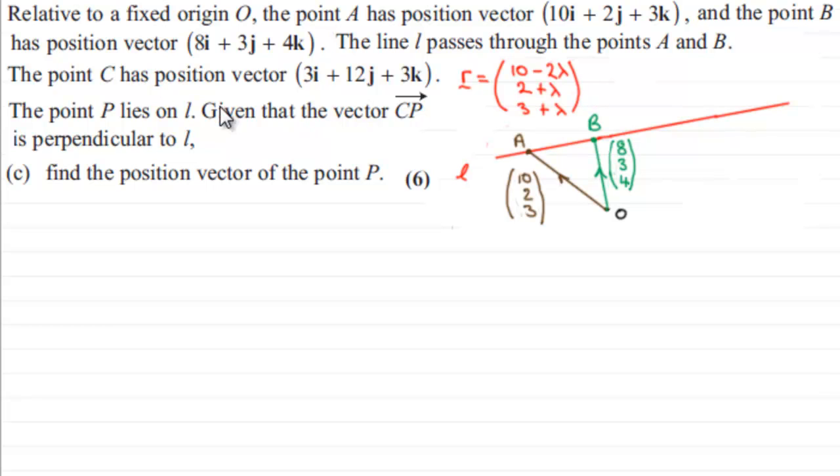We worked out also that the general position vector of any point given by R on this line L could be 10 minus 2 lambda, 2 plus lambda and 3 plus lambda. So, what we've got now is that we're told that the point C has position vector 3i plus 12j plus 3k.